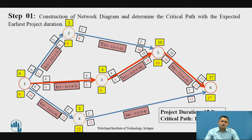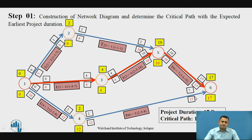Here the activity times and event times are mentioned with the expected time of each activity. When we observe this slide, we get the critical path as 1, 3, 5, and 6, and the overall project duration is 17 days.